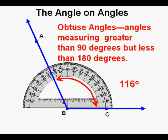Angles measuring greater than 90 degrees, but less than 180 degrees, are classified as obtuse angles. And this obtuse angle appears to measure about 115 degrees, 116 degrees.